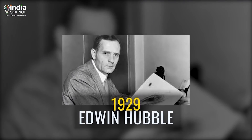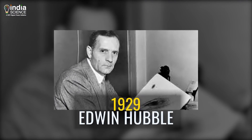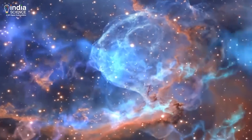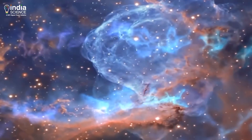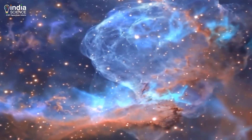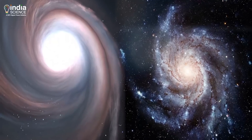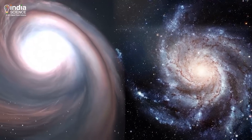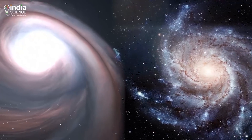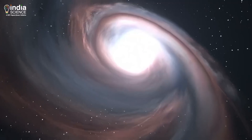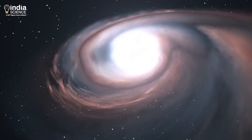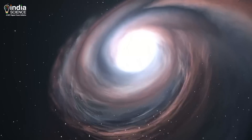In 1929, Edwin Hubble discovered that the Universe is expanding by showing that the galaxies are moving away from each other. And the further away they are, the faster they recede. But with what speed?